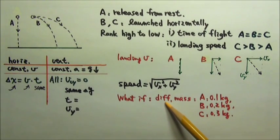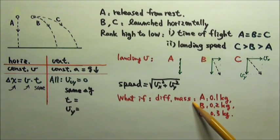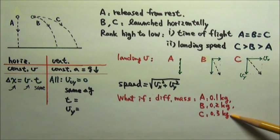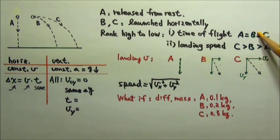Now what if I tell you that the three objects have different mass? If, for example, A is 0.1, B is 0.2, and C is 0.3 kg, how will your answers change?